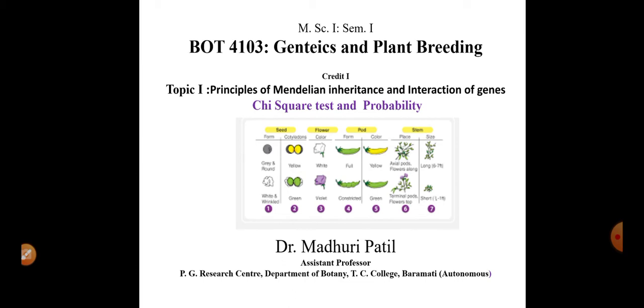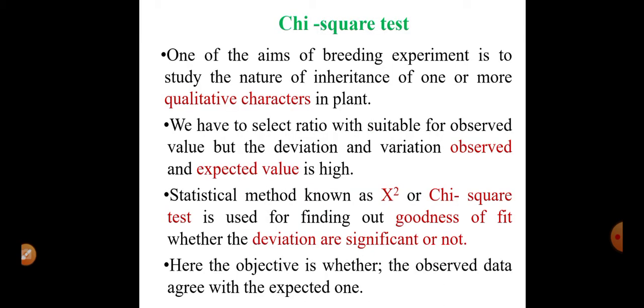Chi-square tests and probability are important for genetical studies. The chi-square test is one of the aims of a breeding experiment where the study of natural inheritance of one or more qualitative characters in plants is studied. We select the ratio suitable for observed values, but the deviation between observed and expected values can be high.